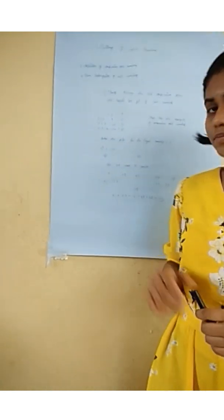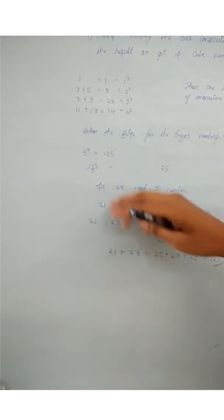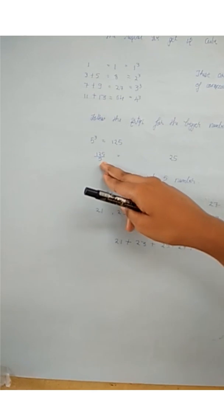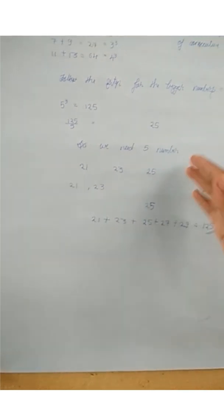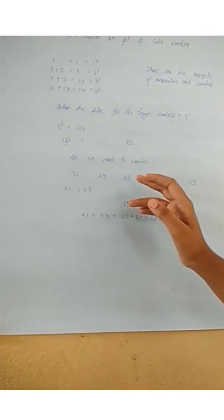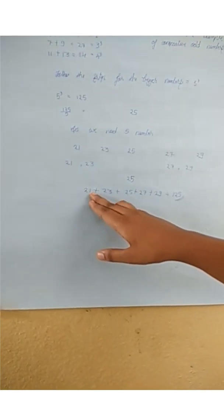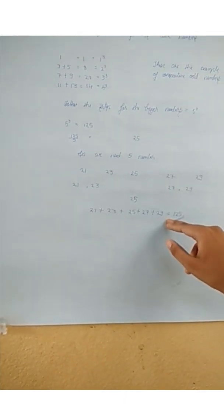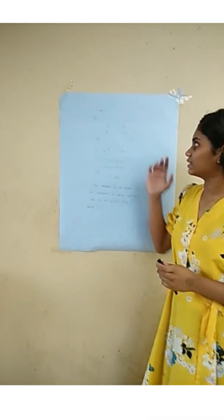You may have a doubt about how to use this step for bigger numbers. Here is the solution. Take 5 cube — the answer is 125. Divide 125 by 5 to get 25, so we need 5 numbers. Take 25 as the middle number, then take 2 consecutive numbers to the left and right: 21, 23, 25, 27, 29. Add all these numbers and the result is 125.